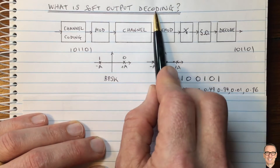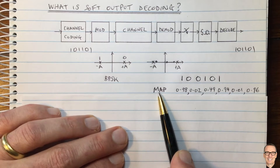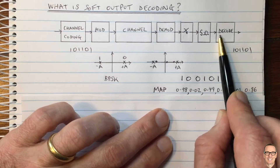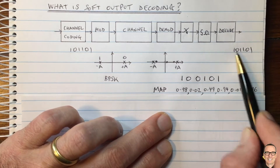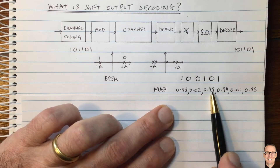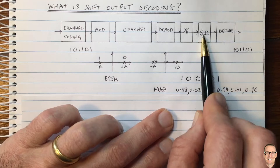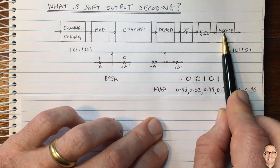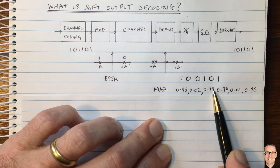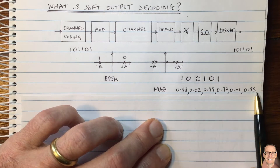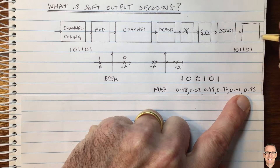This is soft output decoding — the outputs are not hard decisions, they are called soft decisions. The decoder doesn't necessarily need to make hard decisions itself. It could take the flipped version of these probabilities — for example, flipping that bit to 0.51 — and put those out as soft outputs. So we have soft outputs from the detector going into the decoder, and the decoder can also produce soft outputs: 0.98, 0.02, 0.51, 0.94, 0.01, 0.96 — passing those as soft outputs into potentially the next stage of decoding.